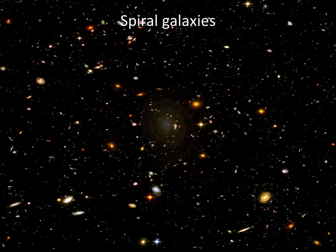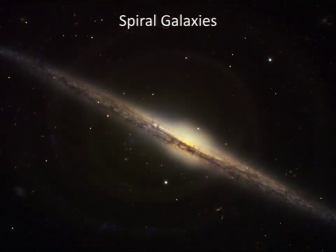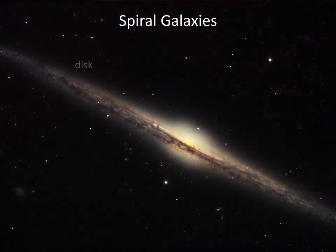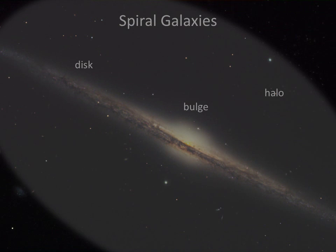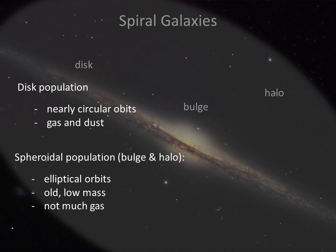Spiral galaxies have a thin disk that extends outward from a central bulge. The bulge merges smoothly into a halo that can extend to a radius of more than 100,000 light years. Spiral galaxies have two distinct populations: the disk population, which includes stars of all ages and masses that orbit in the disk of the galaxy, and the spheroidal population, which consists of the halo and bulge stars.